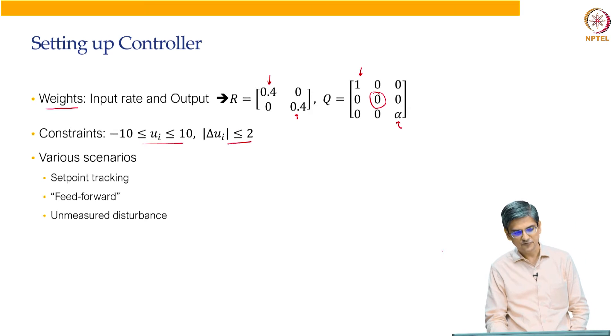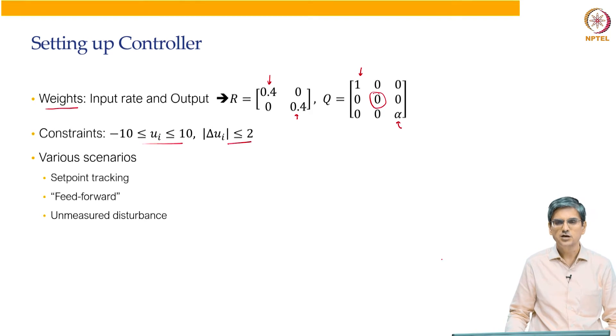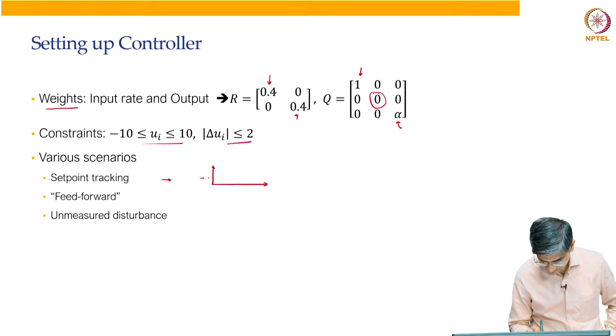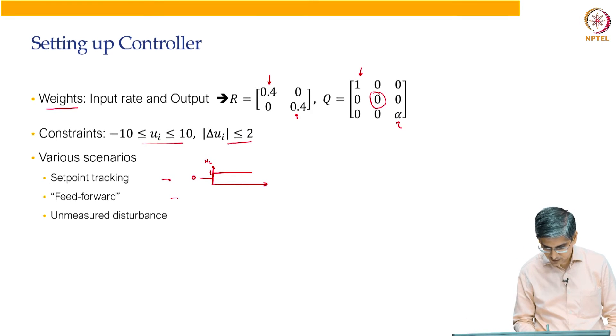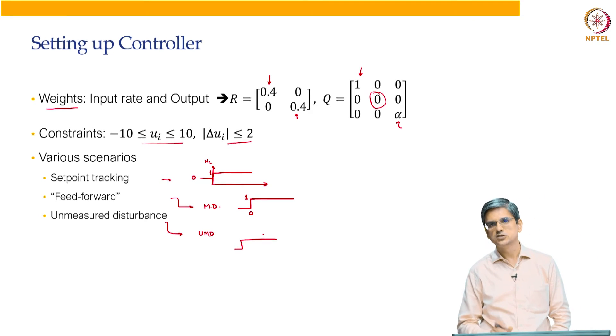Various three different scenarios have been covered in the user guide. First one is the set point tracking. The condition for set point tracking is N2 is given a step change. That means the set point for N2 is changed from 0 to 1 at time 0 and you want to do the set point tracking. The feed forward problem is that measured disturbance variable has a step change at time 0. And the third case is the case of unmeasured disturbances. In this case the unmeasured disturbance also has a step change at time 0. So these are the three scenarios that you can look up in the user guide and try to solve them on your own.